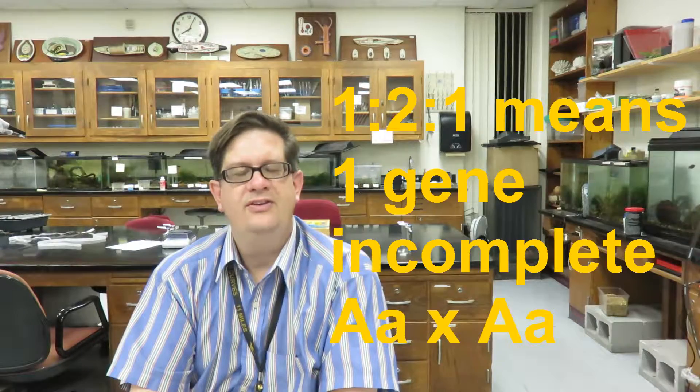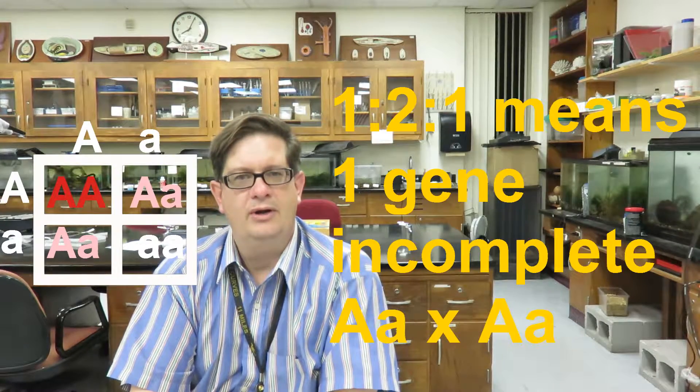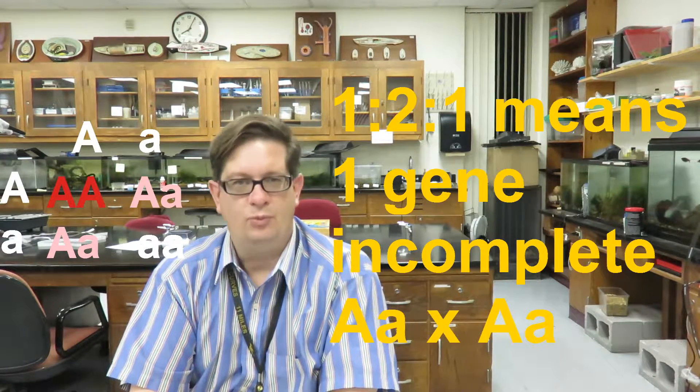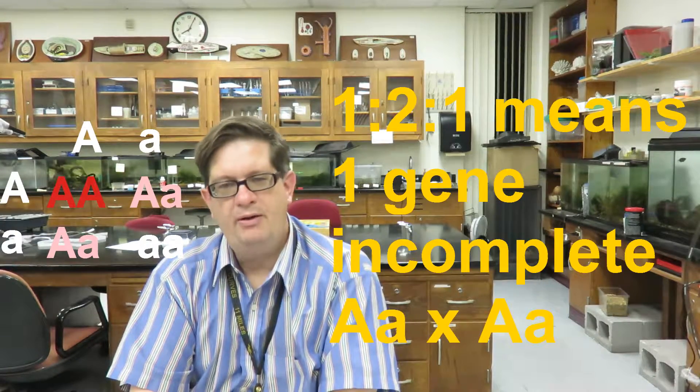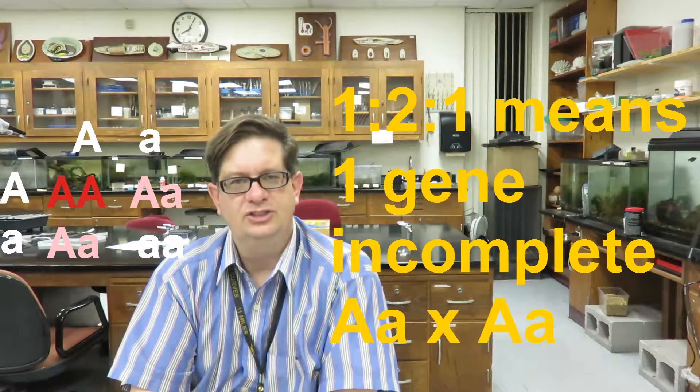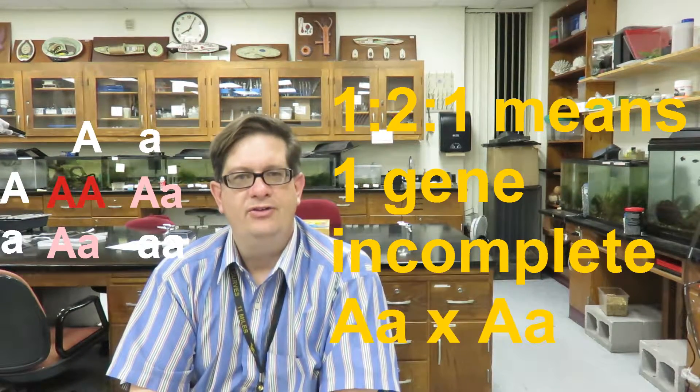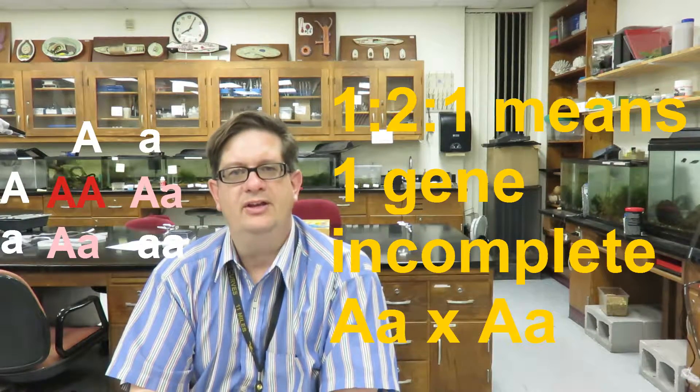If you have a 1 to 2 to 1 ratio, it's exactly the same Punnett Square as the 3 to 1. What I mean by that is it's one gene, both parents are heterozygous for that gene. The difference is that the 1 to 2 to 1 tells you that it is an incompletely dominant gene.